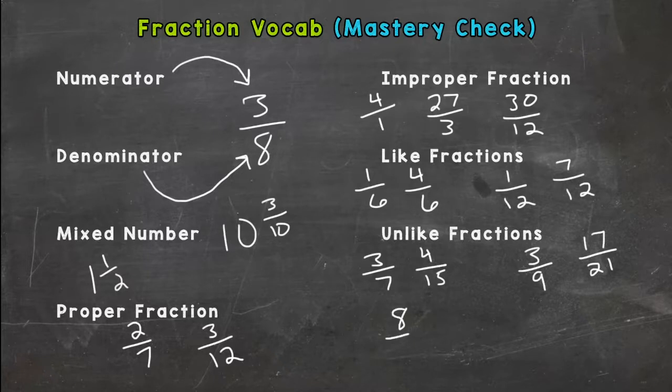What does it equal if your numerator and the denominator are the exact same? So eight over eight or twelve over twelve, what does that equal?